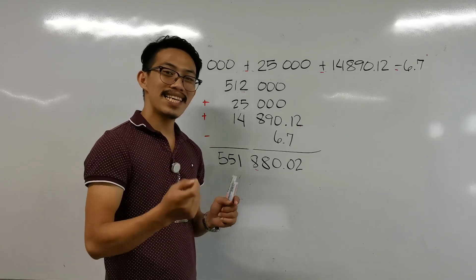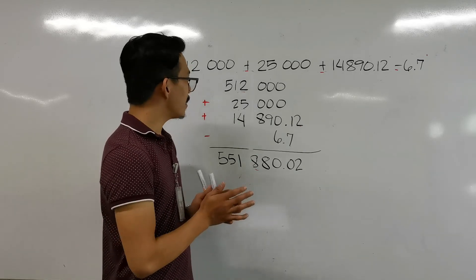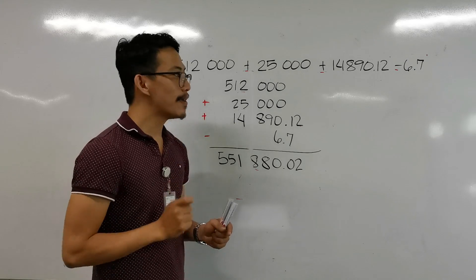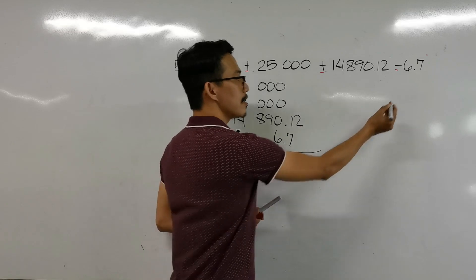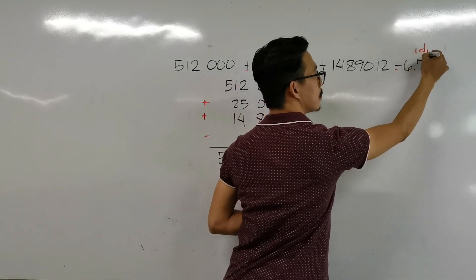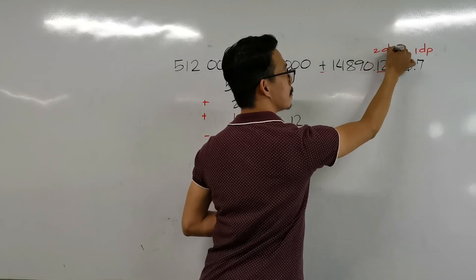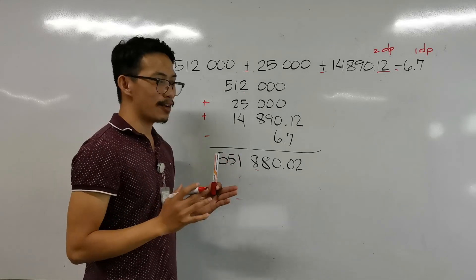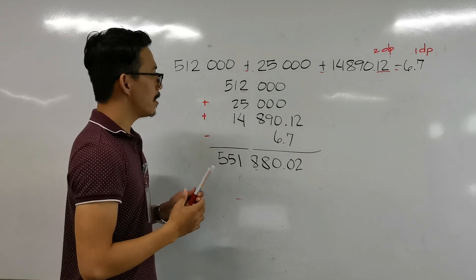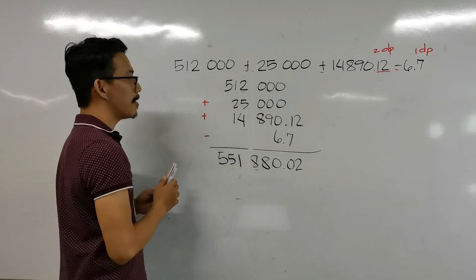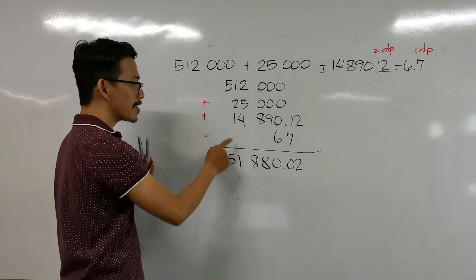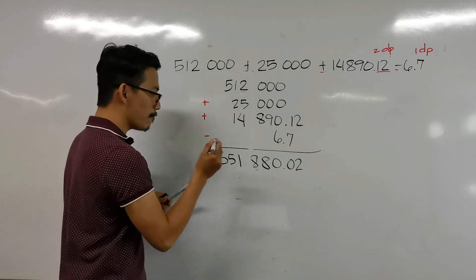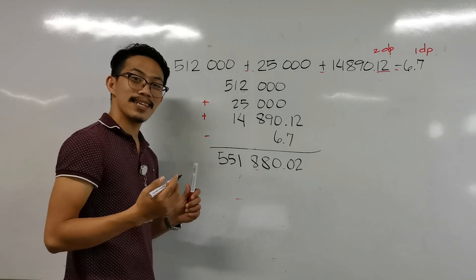How are we going to identify the least precise measurement here? Last time, the trick was to identify the least number of decimal places. However, we cannot use that trick here because some numbers — like 512,000 and 25,000 — do not have decimal places. So we align the numbers: 501,000 plus 25,000 plus 14,890 plus 6.7. The calculator gives us 551,880.02.